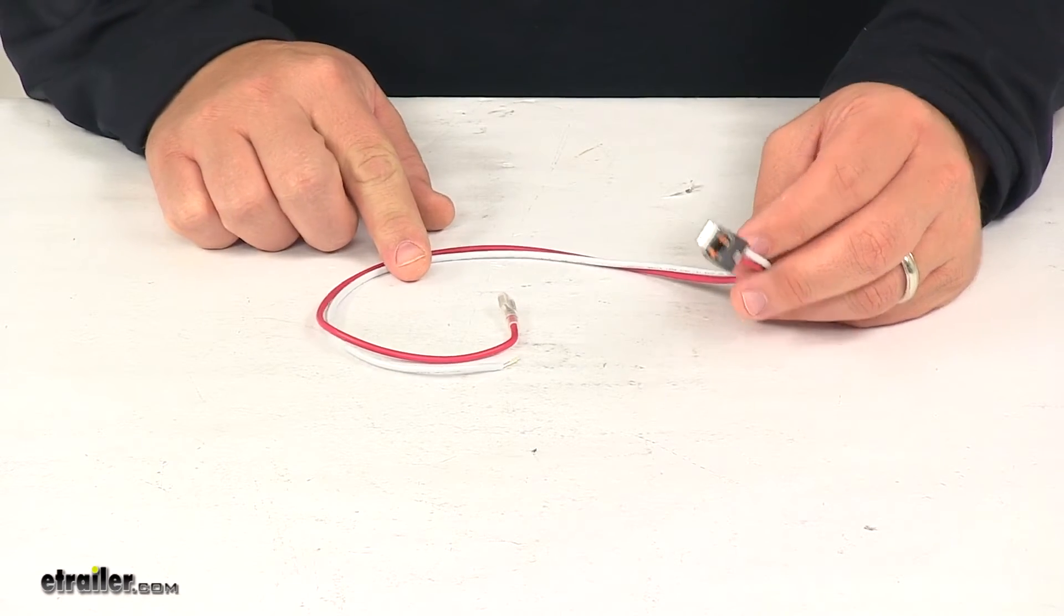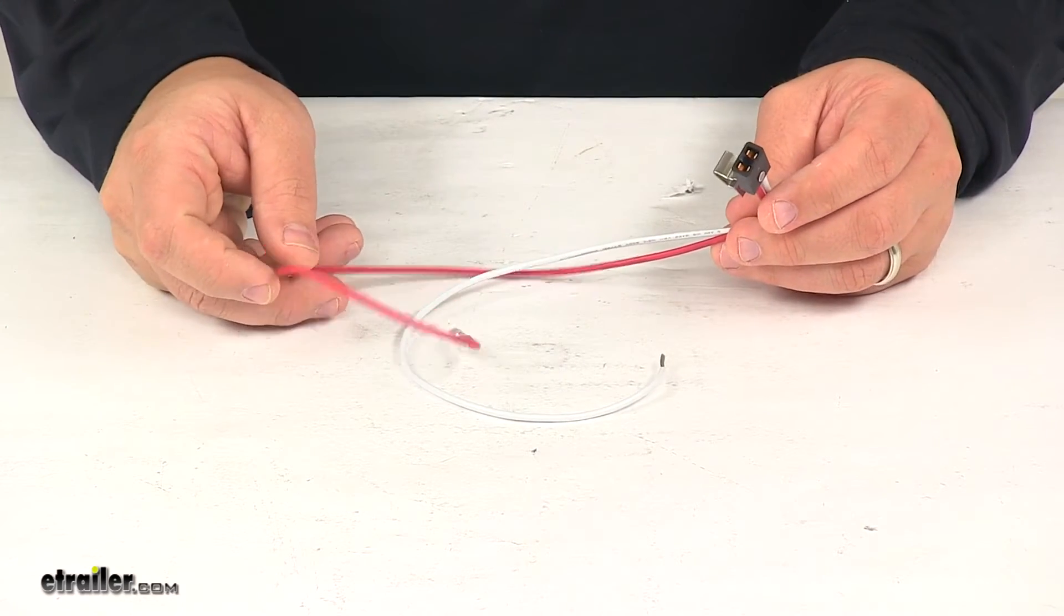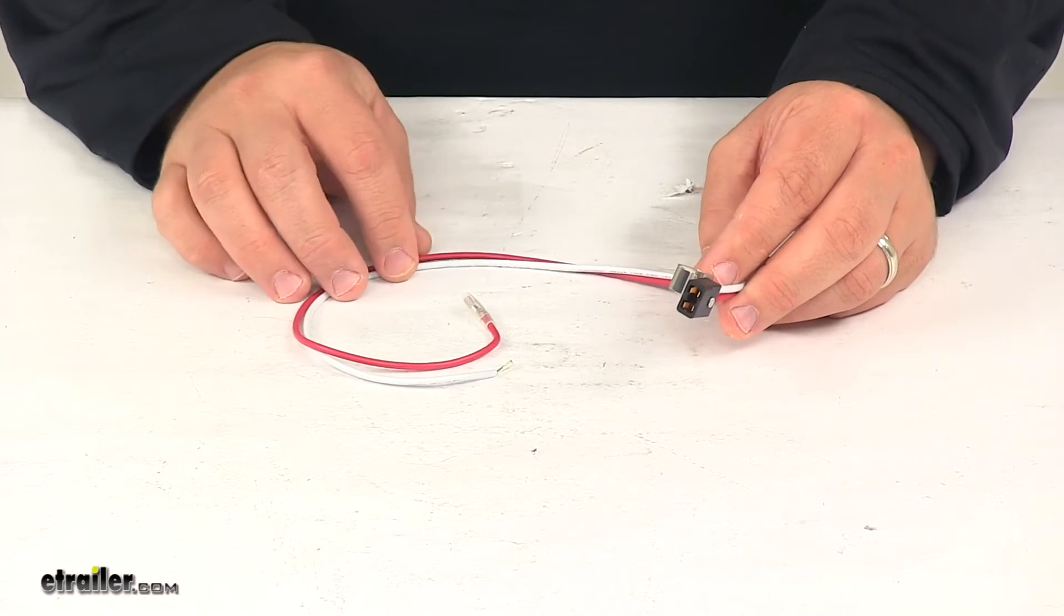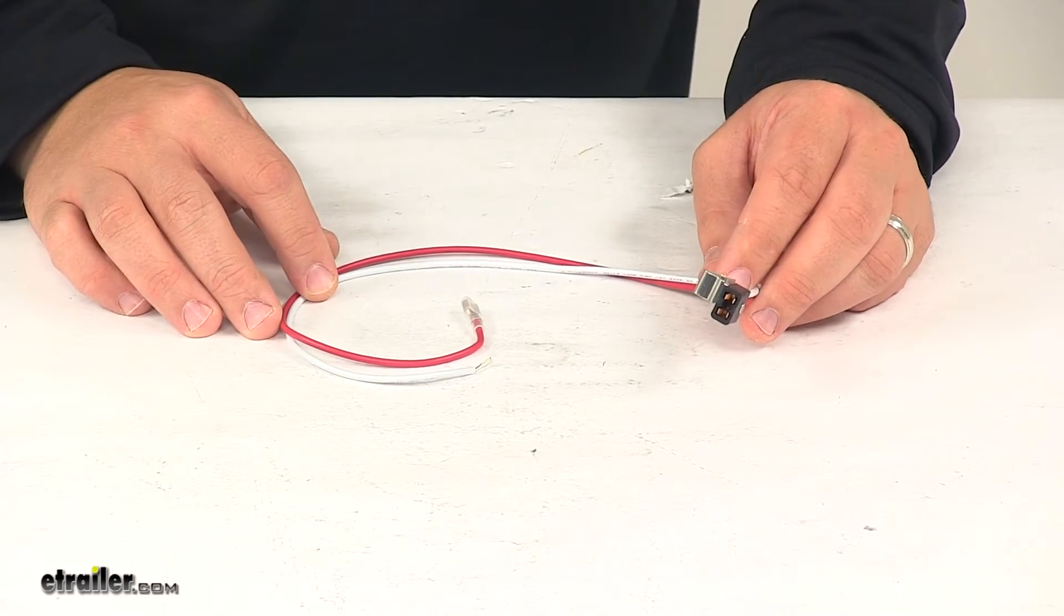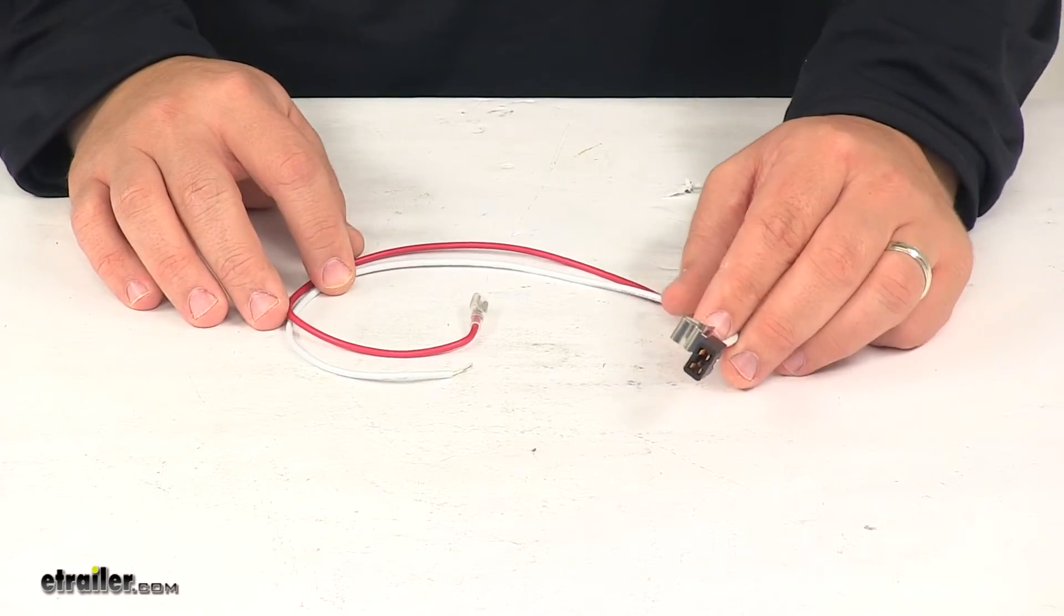It uses 18 gauge wiring in a two-wire design - one wire for power, the other for ground. This is designed to fit Ventline P0721 B and T series range hoods.